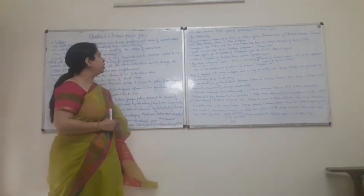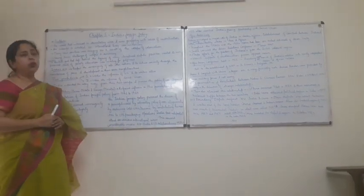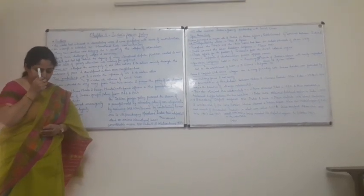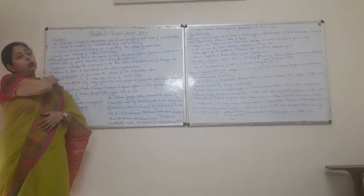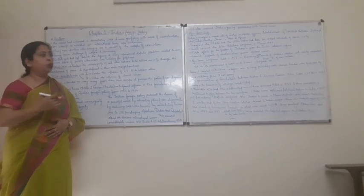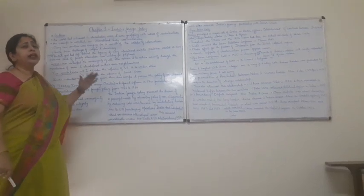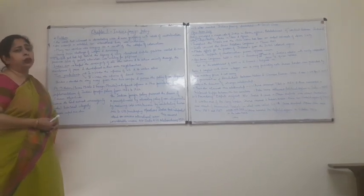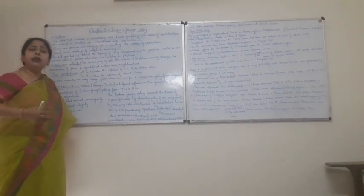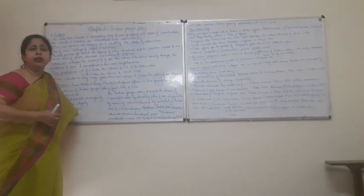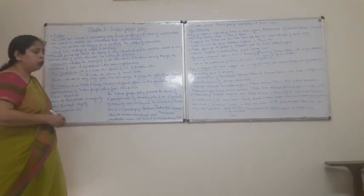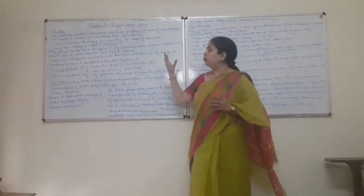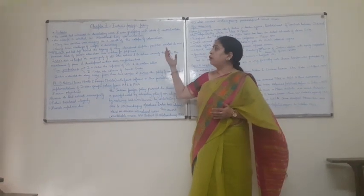Moreover, there was an attempt to establish an international body — the United Nations — whose basic aim was to avoid the chances of any further war. One very important thing during this period was that many new countries were emerging as a result of the collapse of colonialism. Colonialism was coming to an end and many countries were achieving freedom. Most of these newly independent countries were facing two problems: the problem of welfare and the problem of democracy.